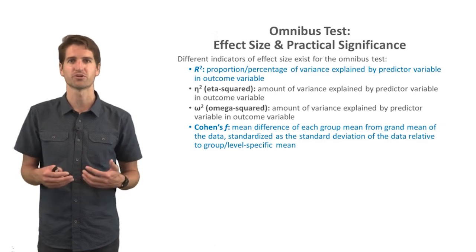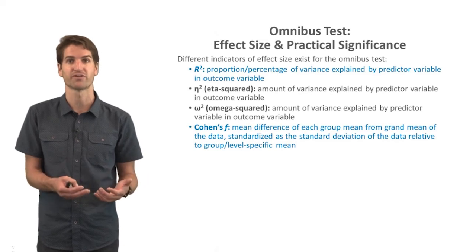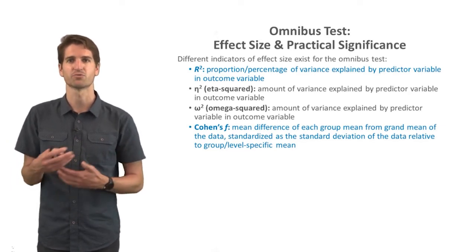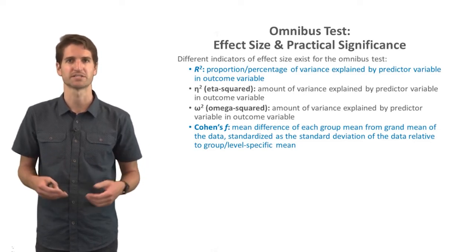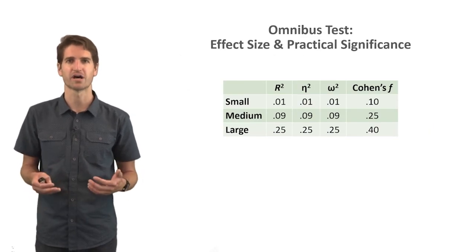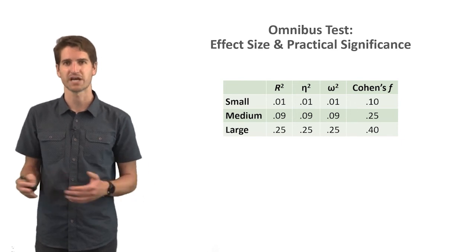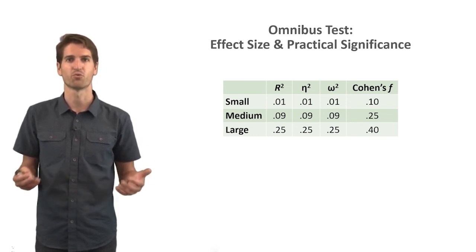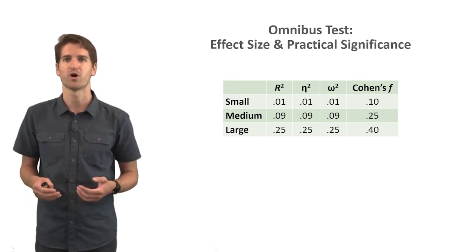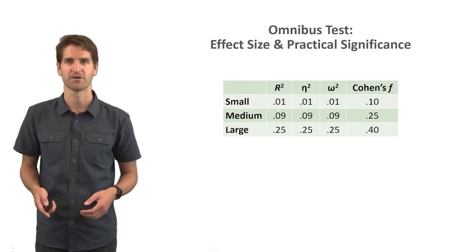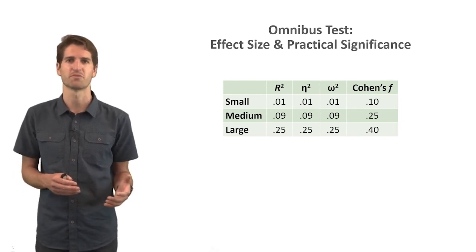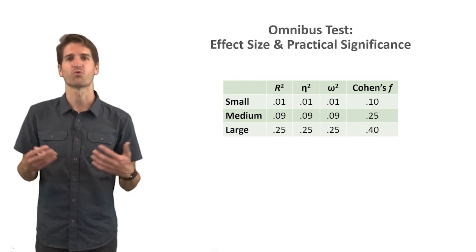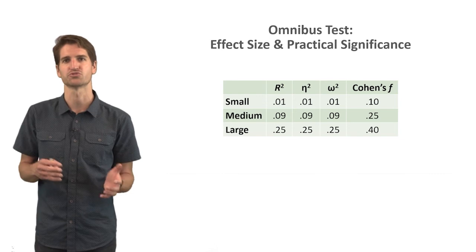I recommend using r-squared and Cohen's f for practical significance in a one-way ANOVA. R-squared is more intuitive as it represents the percentage of variance explained. Cohen's f is conceptually similar to Cohen's d. The conventional cutoffs for r-squared are: small = 0.01, medium = 0.09, large = 0.25. For Cohen's f: small = 0.10, medium = 0.25, large = 0.40. These are general rules of thumb — context matters, and you should consider the organizational stakes when determining what counts as small, medium, or large.